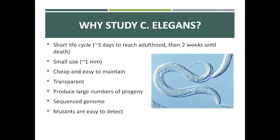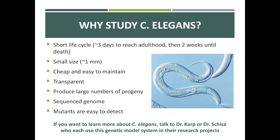Mutants are easy to detect in C. elegans. If mutants looked just like the wild type worm, it would be hard to know if you were looking at a mutant or wild type, so you need to see distinct features in the mutant compared to wild type. If you want to learn more about C. elegans, we have two faculty members in our department who study it — Dr. Karp and Dr. Skiza — both of whom use C. elegans as a genetic model system. If you're interested, make an appointment to meet with them and talk about their research.